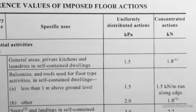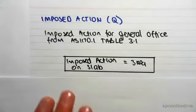So uniformly distributed actions is 3 kilopascals, and that is the answer.